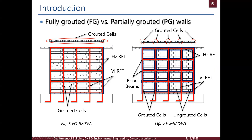Partially grouted construction is more economic and results in a more accelerated process. However, due to the weak connections between the blocks in the ungrouted parts, we expect weak tension and shear failures, which means the behavior of the wall needs more investigation. It's not a homogeneous material like concrete or fully grouted walls — they are different components joined together.